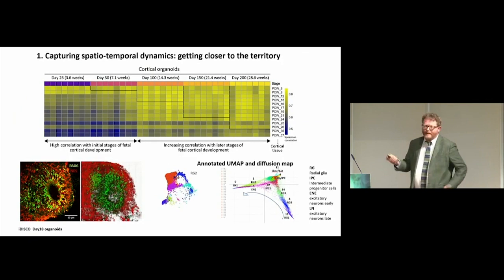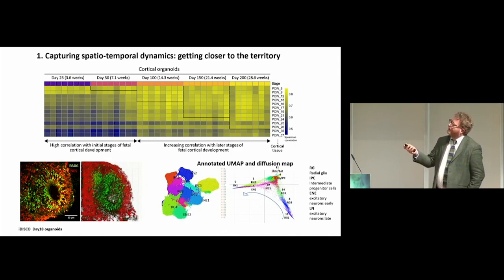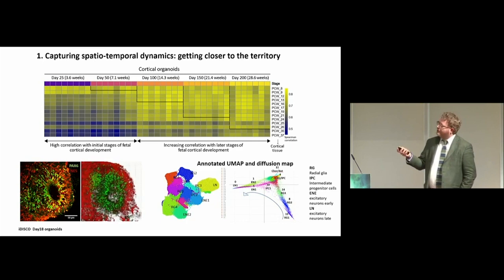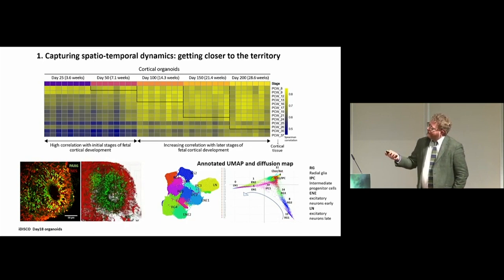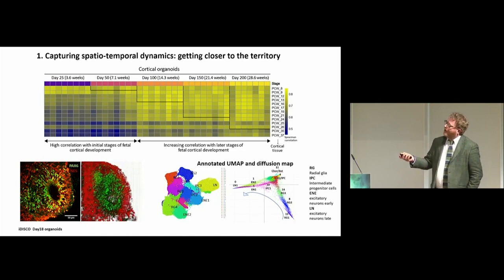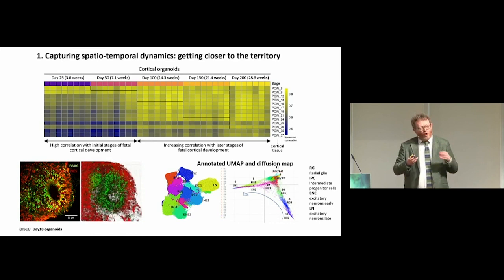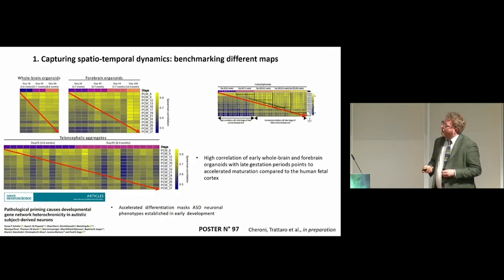In this first theme of capturing spatiotemporal dynamics, what can it mean to get close to the territory? This is data from our lab — cortical organoids differentiated all the way to 200 days. As you see, there is an increasing and very gradual correlation — these are transitomes — to the stages of post-conception weeks. The single-cell transitomics with a diffusion map and annotated UMAP on pseudotime renders the progressive and stereotypical appearance of the various projector populations and neurons, benchmarked on data from the in vivo human developing cortex.